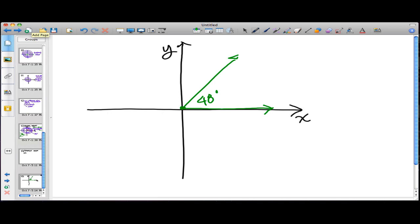The initial side is on the x-axis, and the terminal side is somewhere not. And I'm measuring its positive angle because the initial to the terminal side is in a counterclockwise direction.